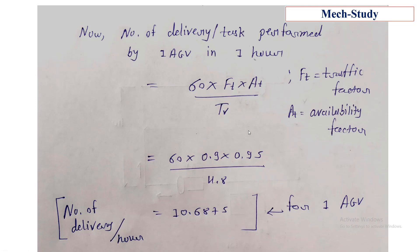Now, the number of deliveries performed by an AGV in one hour is 60 divided by total cycle time, considering traffic factor and availability factor. We get that the number of deliveries performed by one AGV in one hour equals 10.6875.